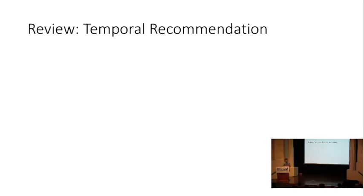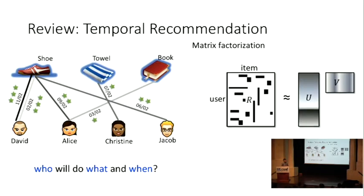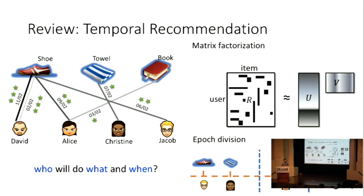The second example is for the temporal recommendation, where your user item interaction contains the time information. In other words, we are interested in predicting who will do what and when. Typically, a commonly used matrix factorization may not be a good choice because it simply ignores the time information. Although you can simply divide your timeline into epochs and do the matrix factorization within each epoch to characterize the changing feature of the user item, but then the problem is how you can divide the timeline.